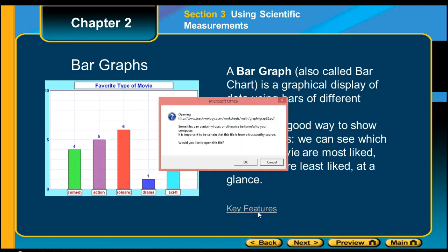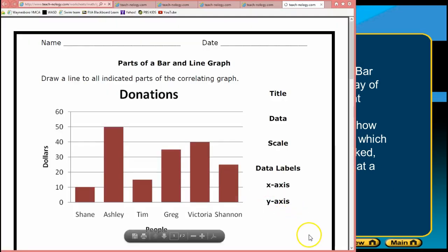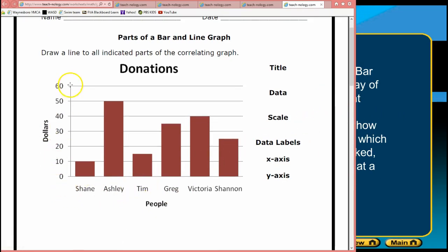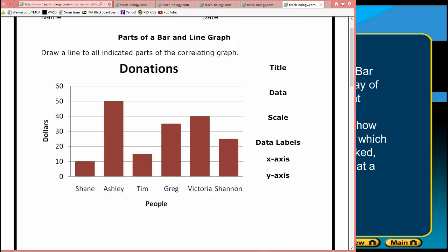Key features in a bar graph would be a title, the data, scale, data labels, and an x and y axis. So we have labels here on the side of dollars, and we have people. We also have a scale going up the side. Each segment is numbered and has the same unit difference. You have your labels across the bottom, and you can see that these are all well-labeled and well-marked. If you have multiple colors, you would want to make sure that you had a key to indicate what they were.